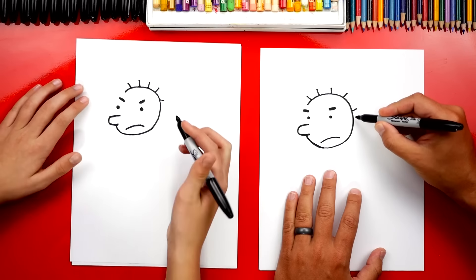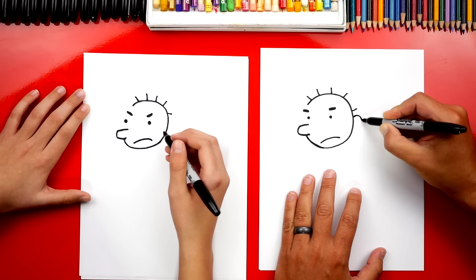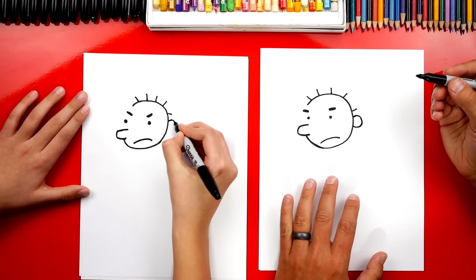Okay, now we're going to draw his ear. I'm going to draw a C shape right here, and we're going to come out and back in. Okay.